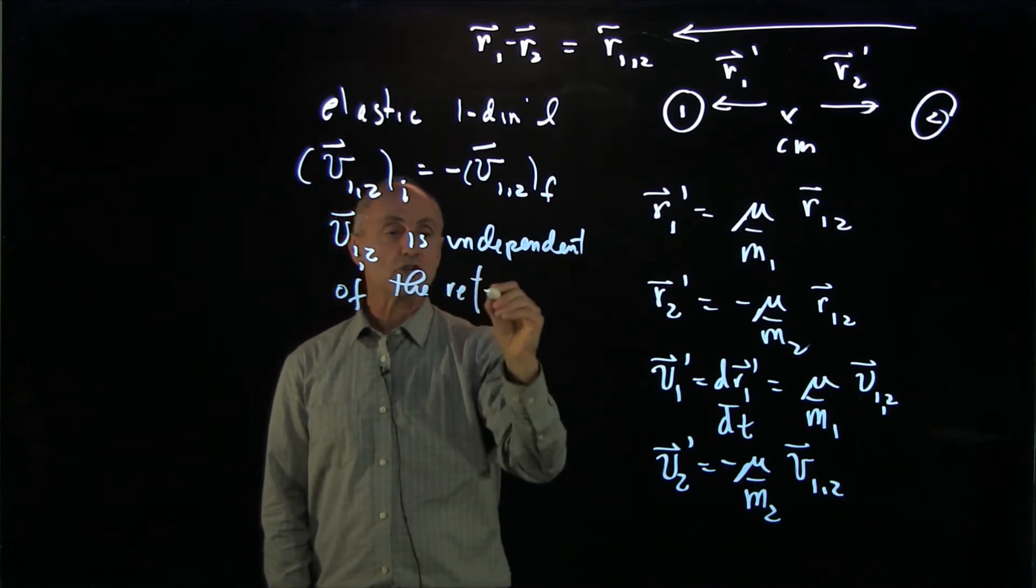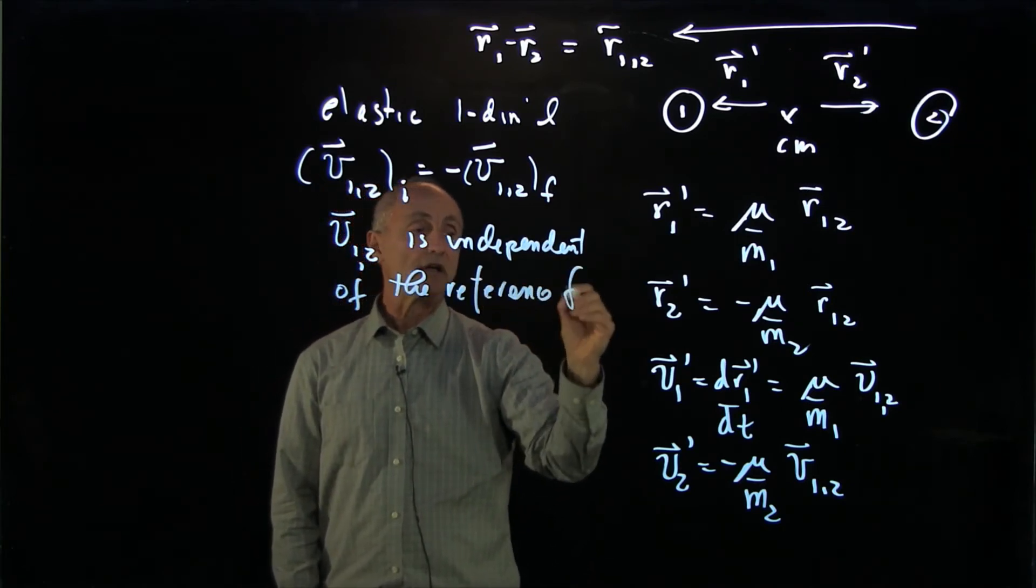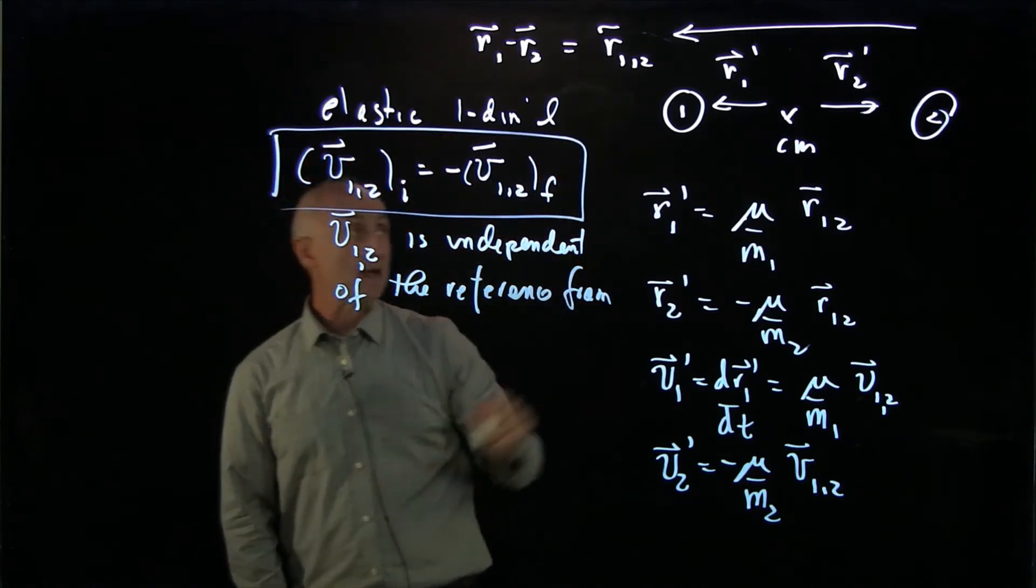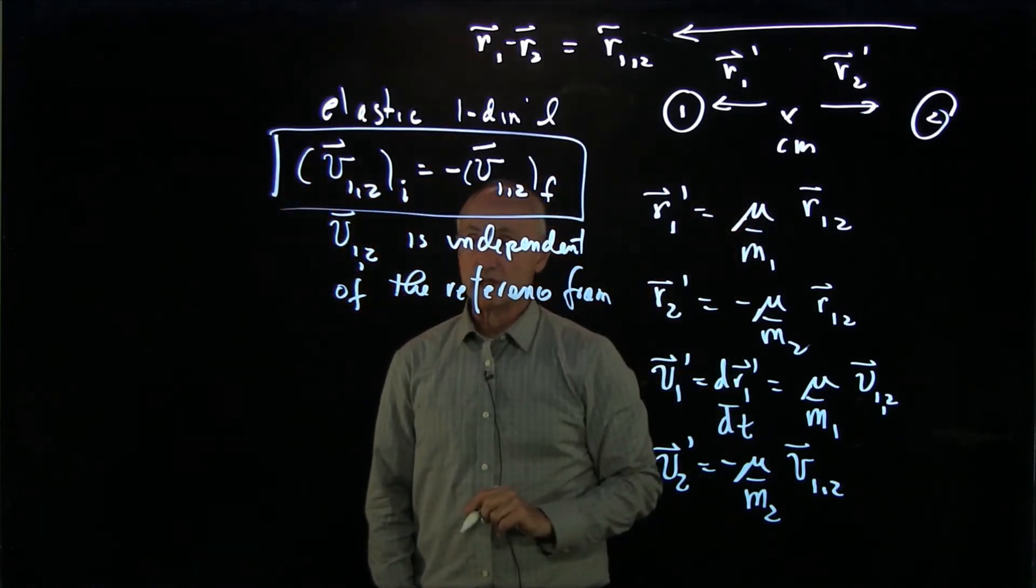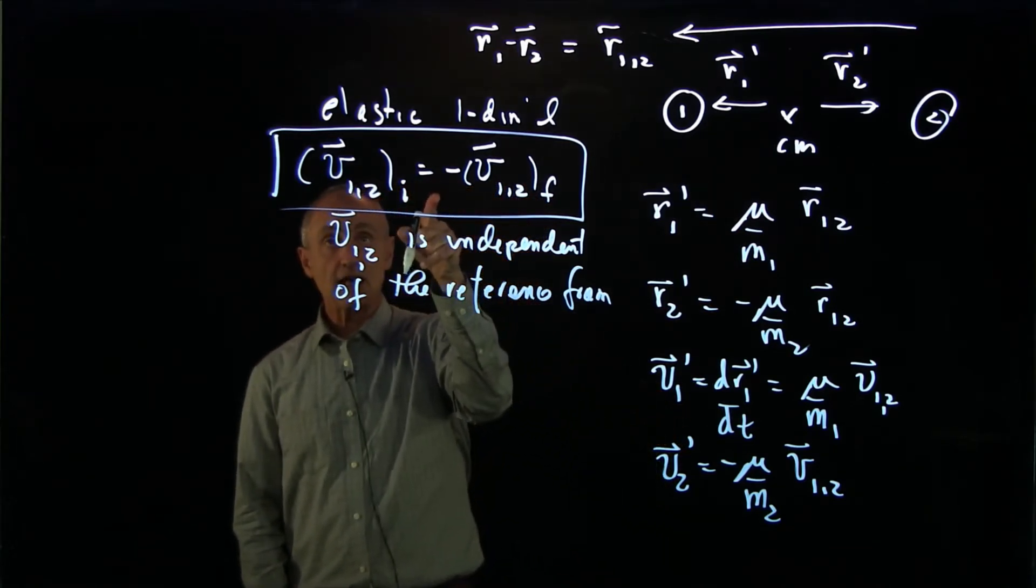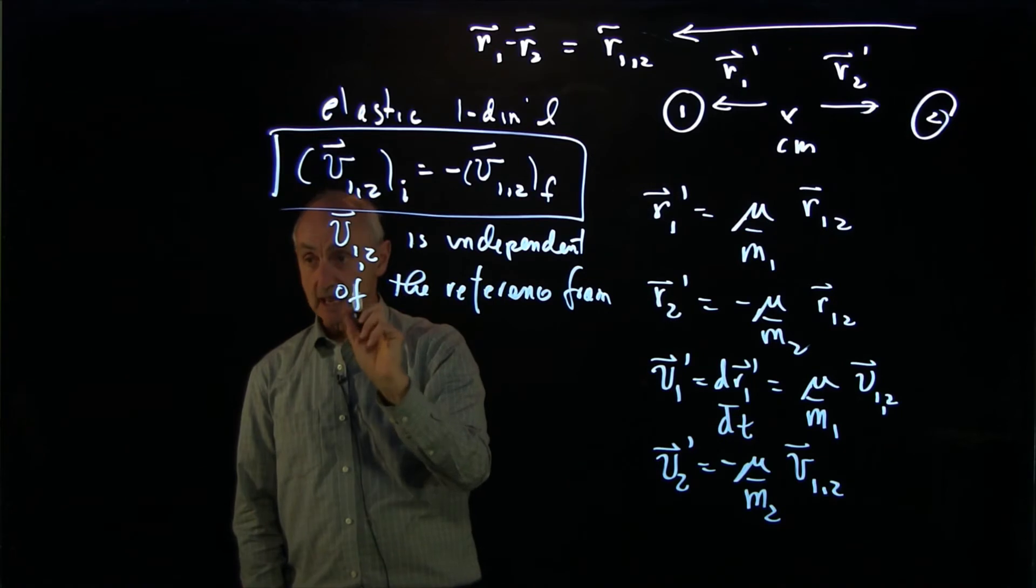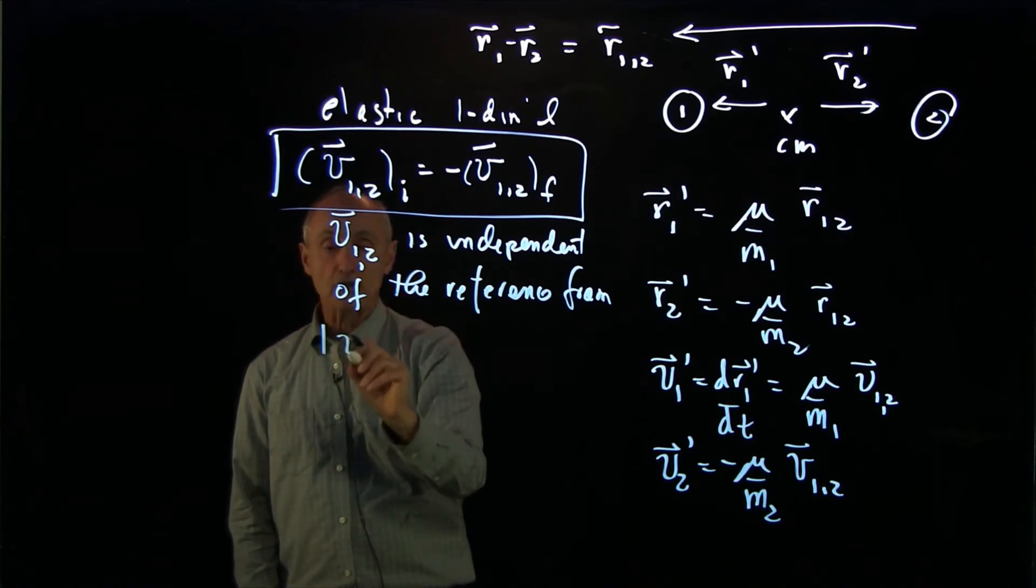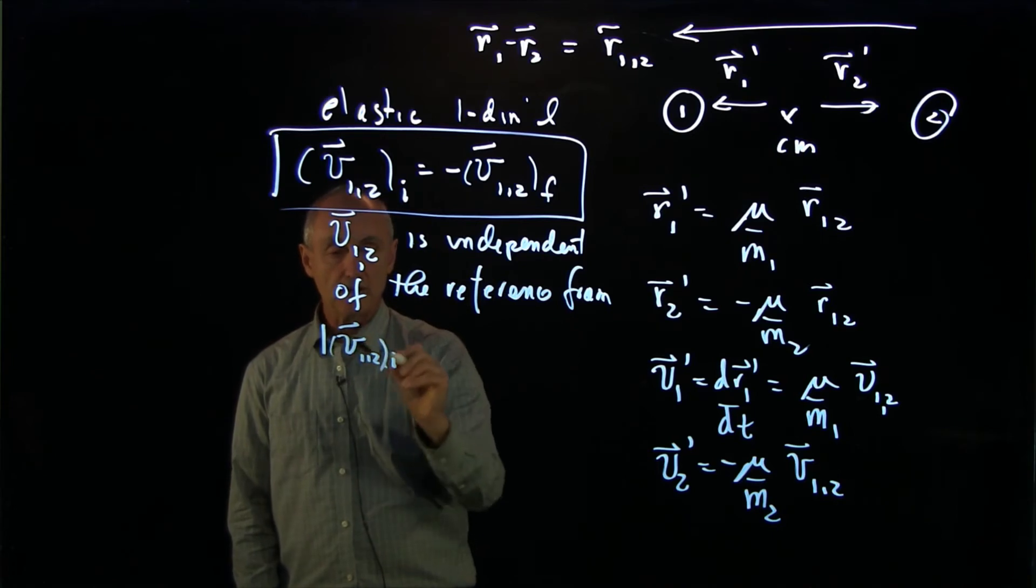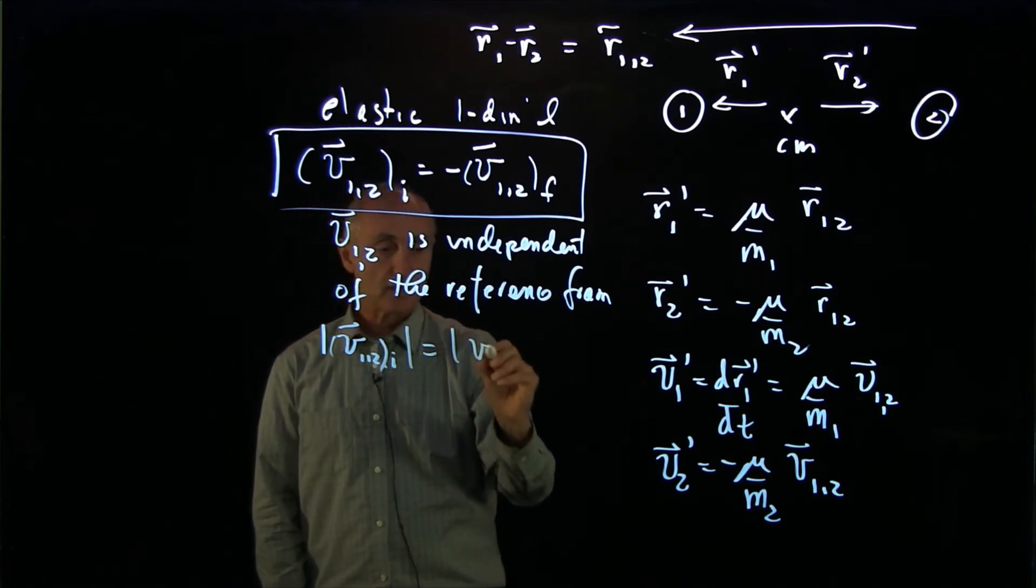So this condition about relative velocity is true in any reference frame, and in particular, it's true in the center of mass frame. So what that shows us is that this condition, this statement, is that the magnitude of the relative velocity is constant.